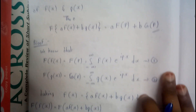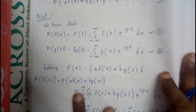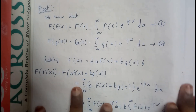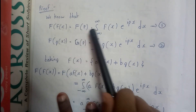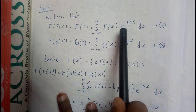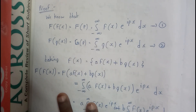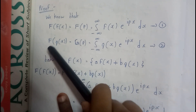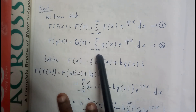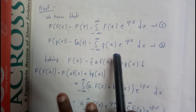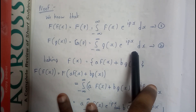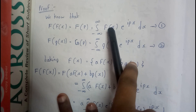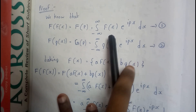Let us go through the proof. We know the Fourier transform of f of x is the integral from minus infinity to infinity of f of x times e to the power ipx dx. Similarly, the Fourier transform of g of x equals the integral from minus infinity to infinity of g of x times e to the power ipx dx. These are the two equations — the Fourier transform of f of x and the Fourier transform of g of x.